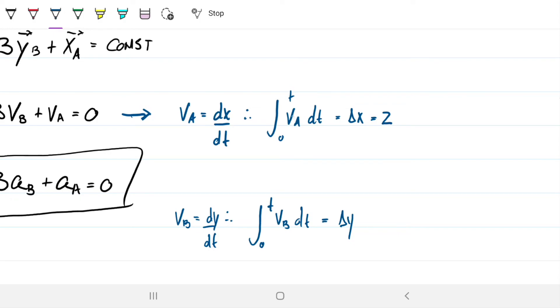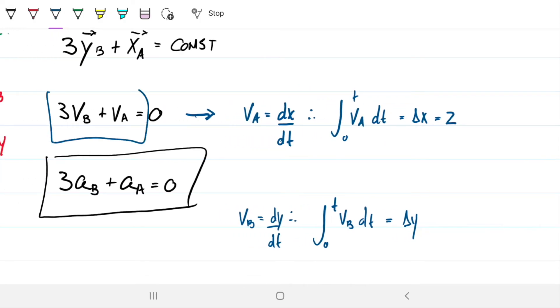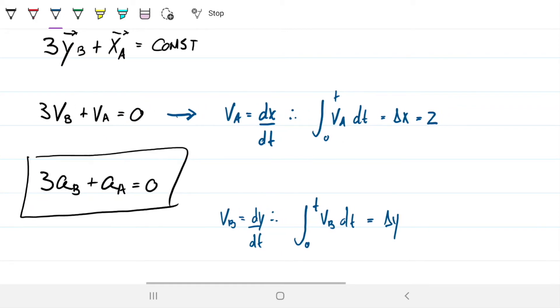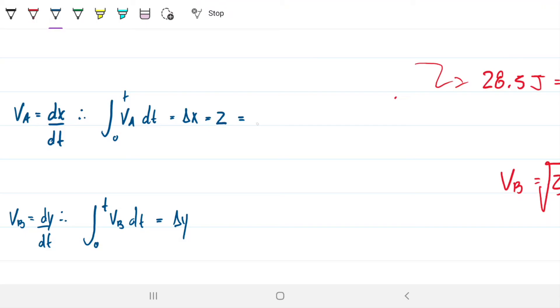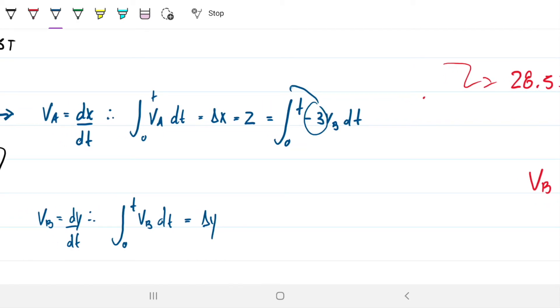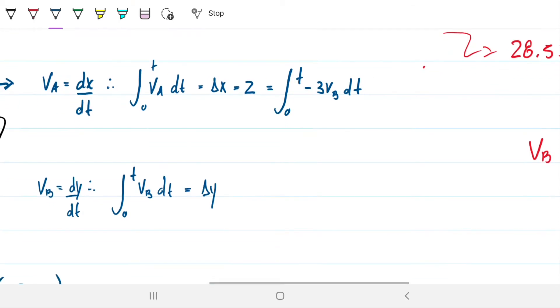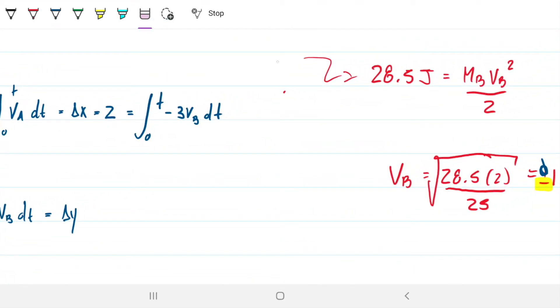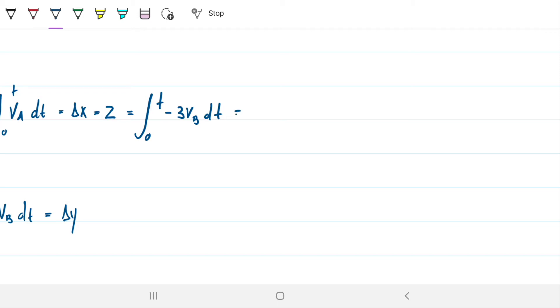So therefore, the integral va dt, as we go from zero to t, is equal to delta x, which is just two. We found to be two. The problem says it's two. In the case of vb, vb is just how y is changing with time. So therefore, the integral of zero to t of vb dt is delta y. But we know, we happen to know that three of vb plus va equals zero. So where I have va, I can substitute va by, so I can rewrite this as va is just minus three vb.